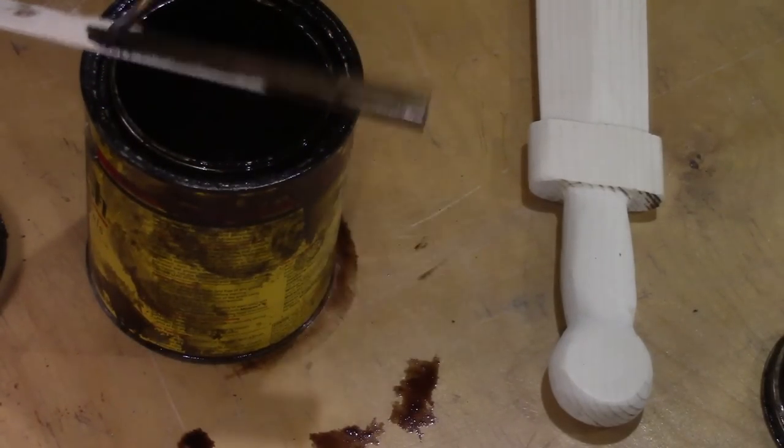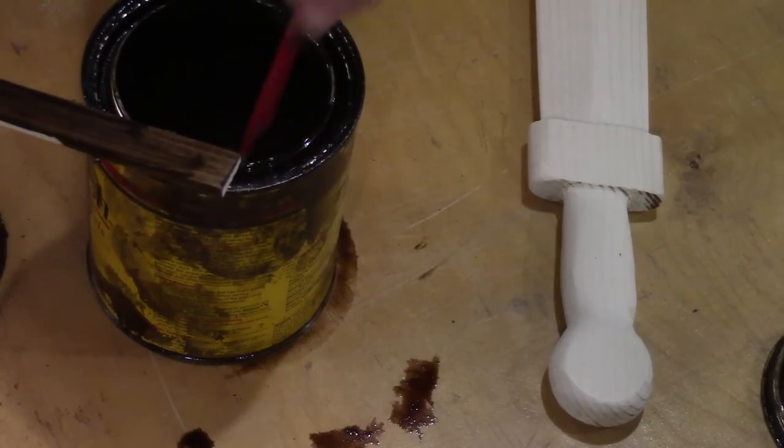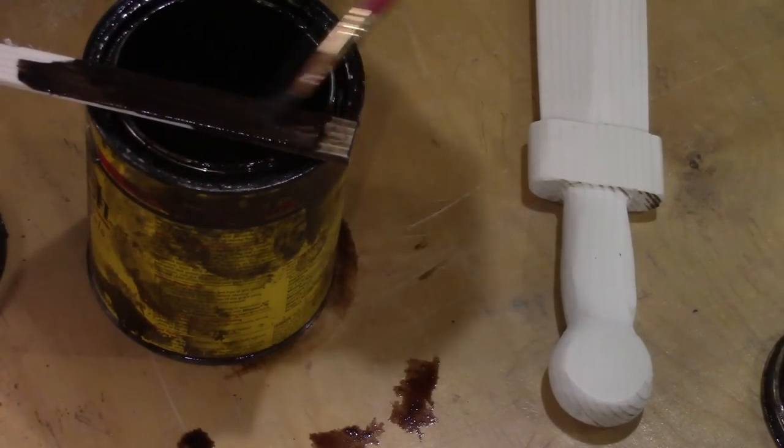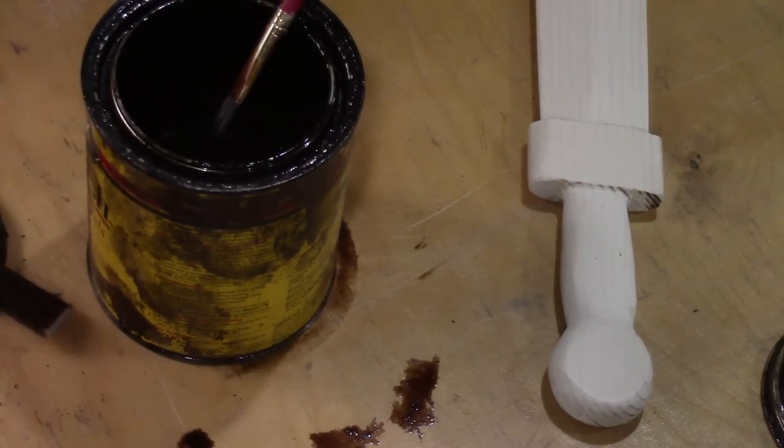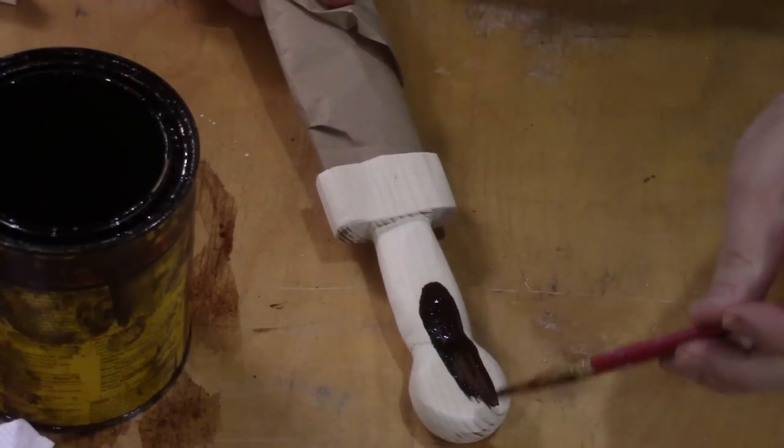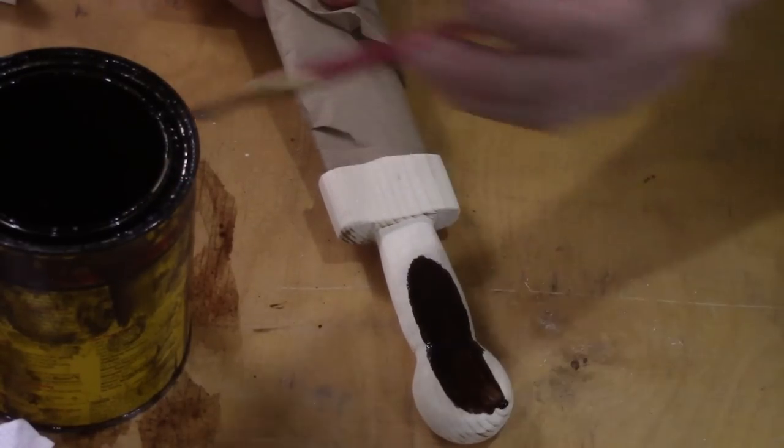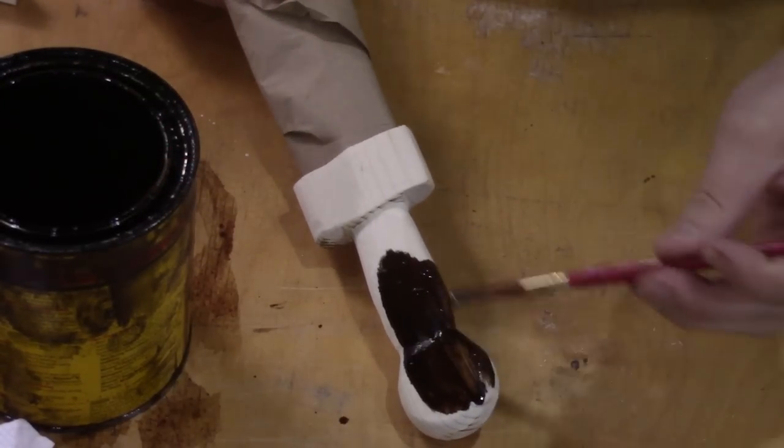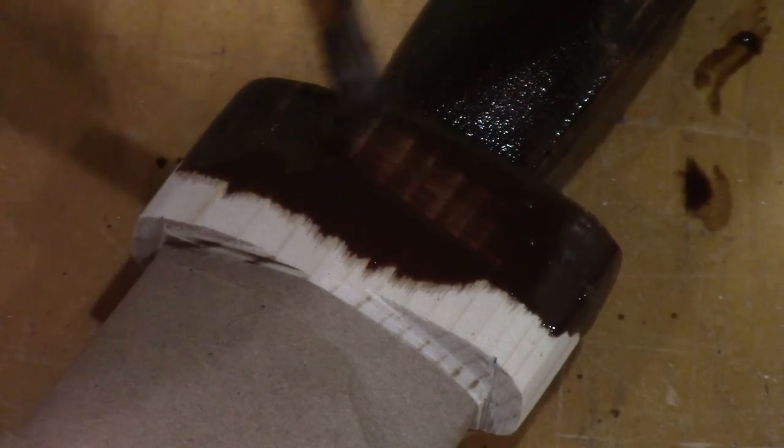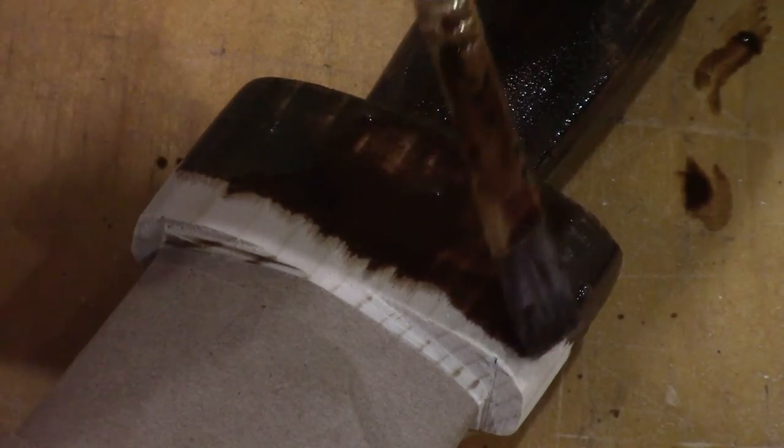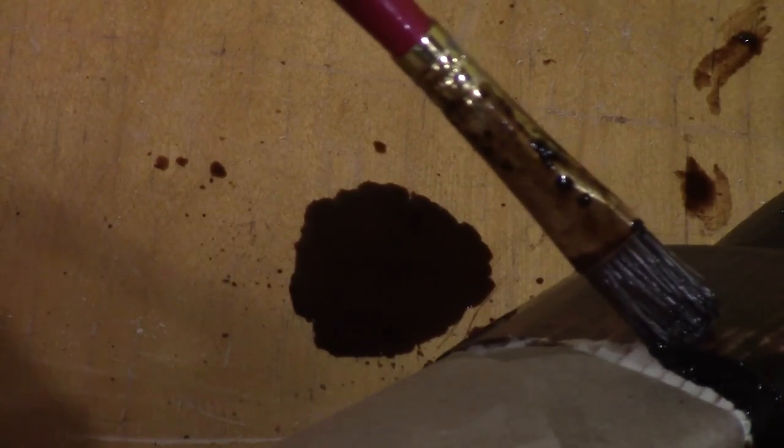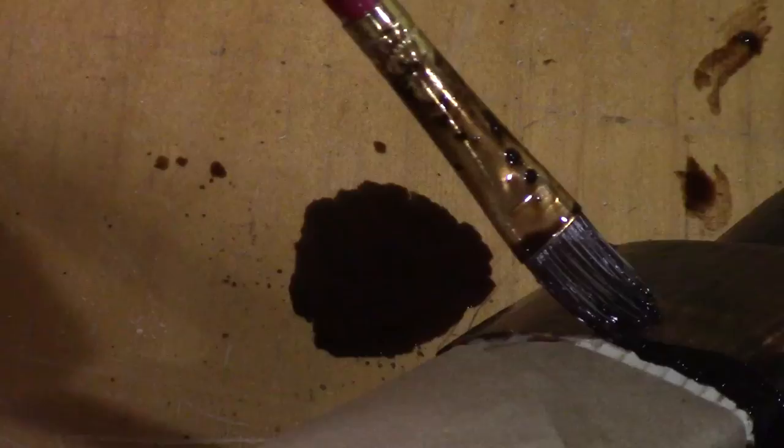Now always test your stain on a scrap piece of wood. Stain works best when you apply a coat. You let it dry a bit and then you apply another coat if you want it darker. So don't worry about it if it's not dark enough on the first coat. Also the stain will have a tendency to want to bleed. It'll soak into places you don't want it. So it's not a big deal. Try not to get it everywhere. I wrapped mine in a piece of brown paper just to help not get splatters all over the blade.